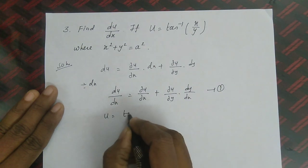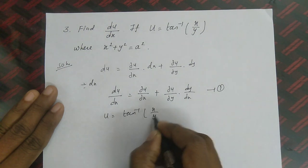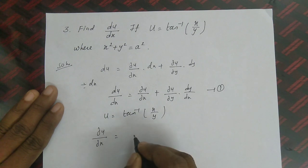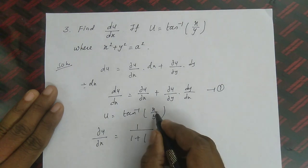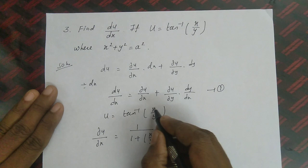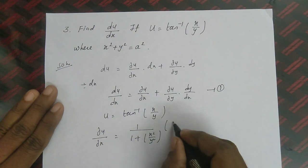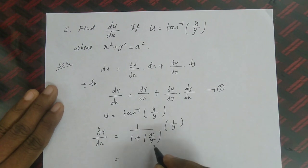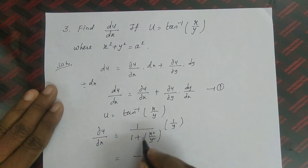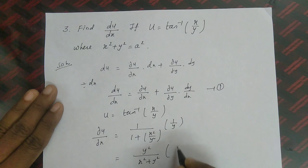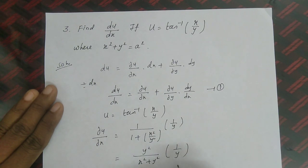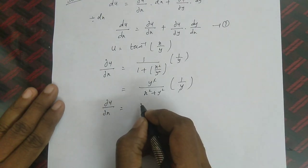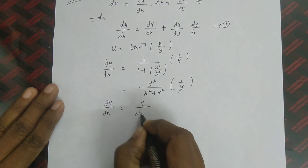Given u = tan⁻¹(x/y). For ∂u/∂x: differentiation of tan⁻¹ is 1/(1 + x²), treating x/y as x inside, giving 1/(1 + x²/y²), then differentiating x/y with respect to x gives 1/y. Taking LCM: (y²/(x² + y²)) · (1/y). Cancelling y, ∂u/∂x = y / (x² + y²).